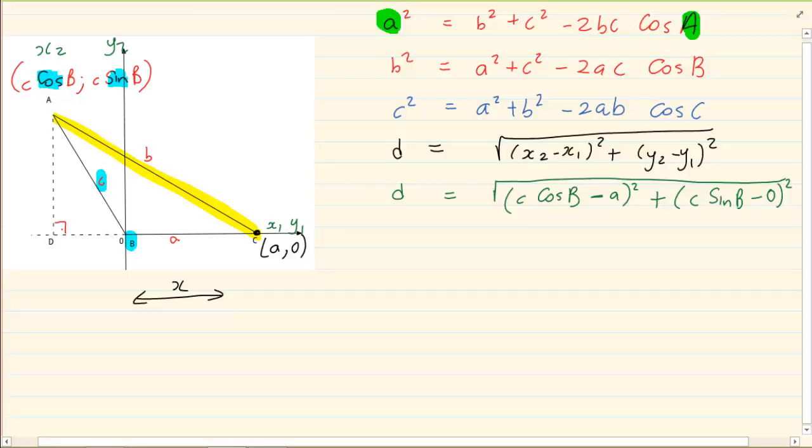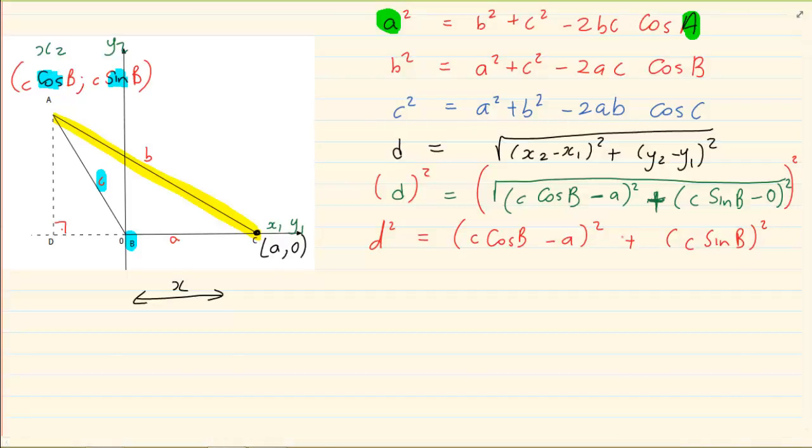You can't take this root sign and cancel it with that root square. That's mathematically incorrect. As long as there's two terms or more than one term, you can't go about cancelling things. What we can do is we can get rid of this entire root sign by squaring it. But what we do on one side, we do on the other side. So we now have D squared is equal to C cos B minus A all squared plus C sin B and I can simply say all squared because minus 0 means nothing.